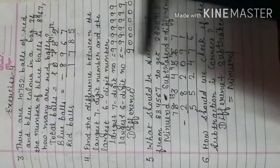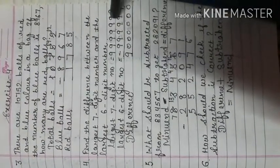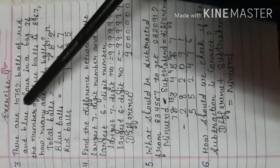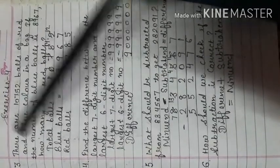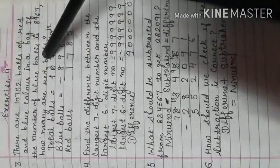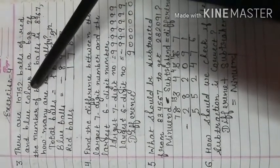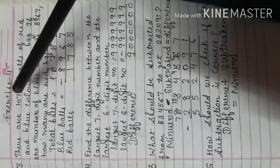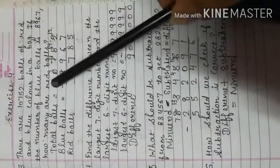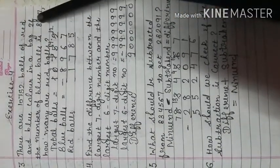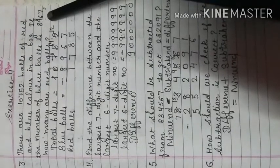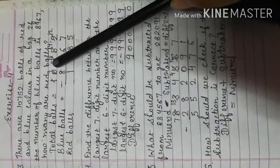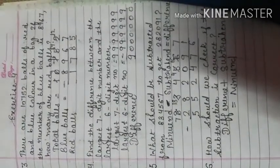Let us solve these word problems, starting with question number 3: there are 10,752 balls of red and blue color in a bag — that means 10,752 is the total including red and blue. Out of these, the number of blue balls is given as 8,967. Now you are to calculate how many red balls there are.